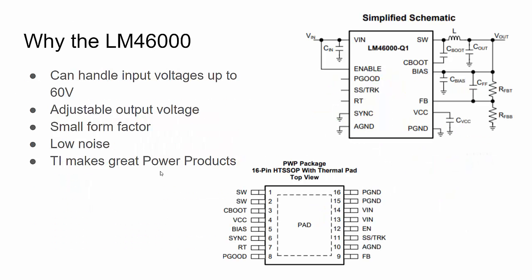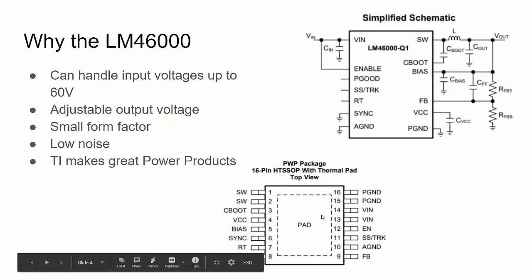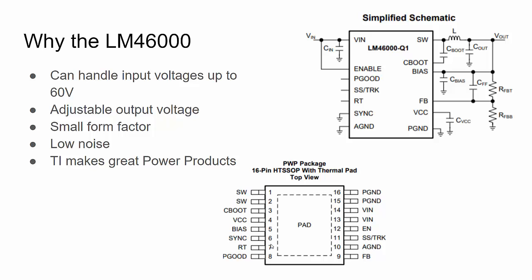Why did I choose the LM46000? I wanted this device to be rugged and reliable. It can handle input voltages up to 60 volts DC. The output is adjustable — set by two resistors forming a voltage divider for the feedback pin. I wanted a small form factor: TI has a patented thermal pad on the bottom of many of their power ICs — a metal pad that connects to the PCB, providing a low-resistance ground connection and thermal path to dissipate heat, allowing a very small package.